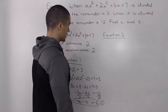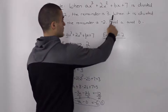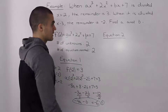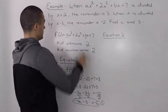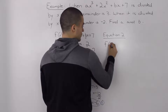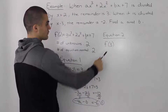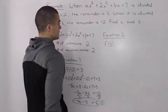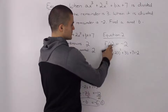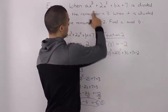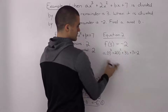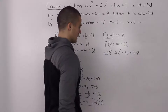Now let's find our second equation using the information that when the dividend is divided by x minus 3, the remainder is negative 2. Using the remainder theorem again, since our divisor is x minus 3, f of 3 gives us the remainder when we plug in 3 for the x values in the dividend. And we're told that the remainder has to equal negative 2.